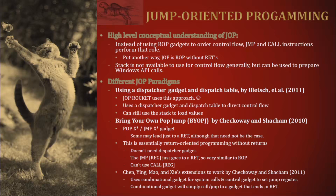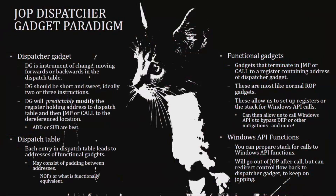Jump-oriented programming, or JOP, differs in that we use jump and call instructions to control flow. JOP is really just ROP without the RETs. While the stack is not available for control flow, it is still necessary to use the stack to set up and make calls to the Windows API. There are also hybrid techniques — a pop-jump approach lets you pop into a register and jump to it, going back to the stack, allowing you to mix JOP and ROP.